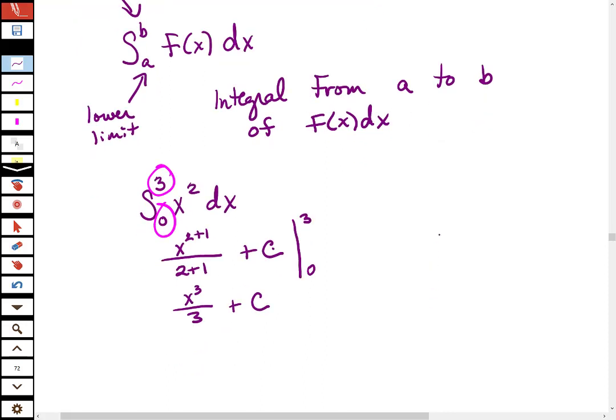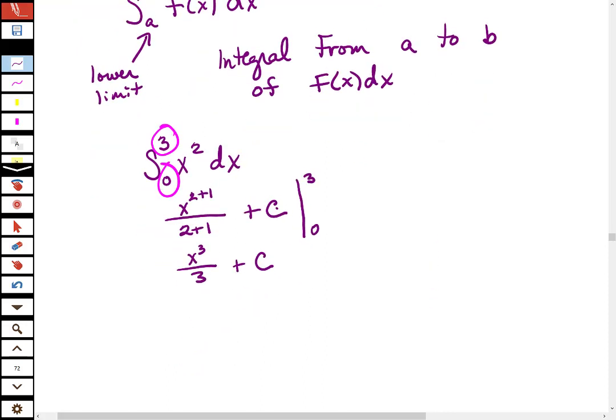So now I have this. To find this, I just take 3 and I plug it in. So I plug in, they call this, like, let's say, capital F of x is this guy. I'll find capital F of 3 and subtract F of 0. And we call this computation the definite integral.